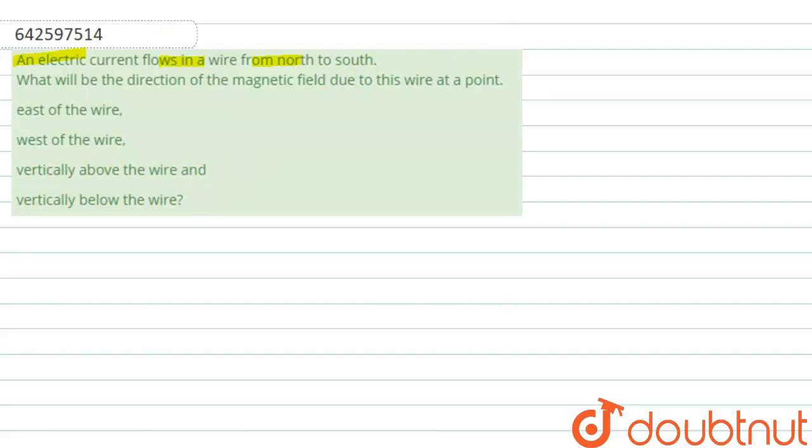So students, let's take the directions as given in this question. This is east, this is west, this is north, and this is south. And in the question, the current is flowing from north to south. That means the current is flowing from north to south.